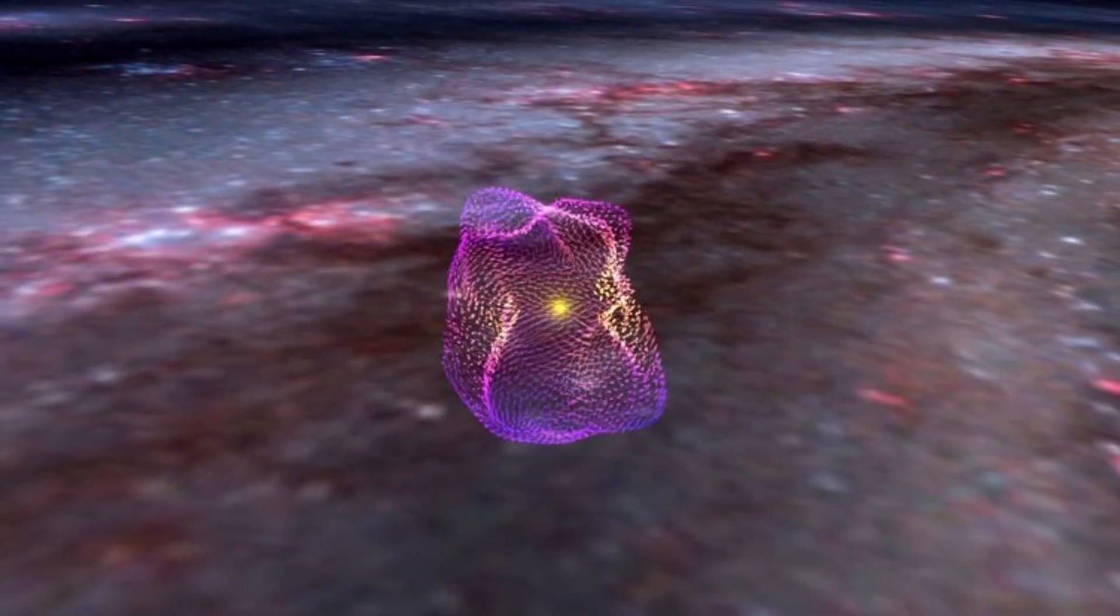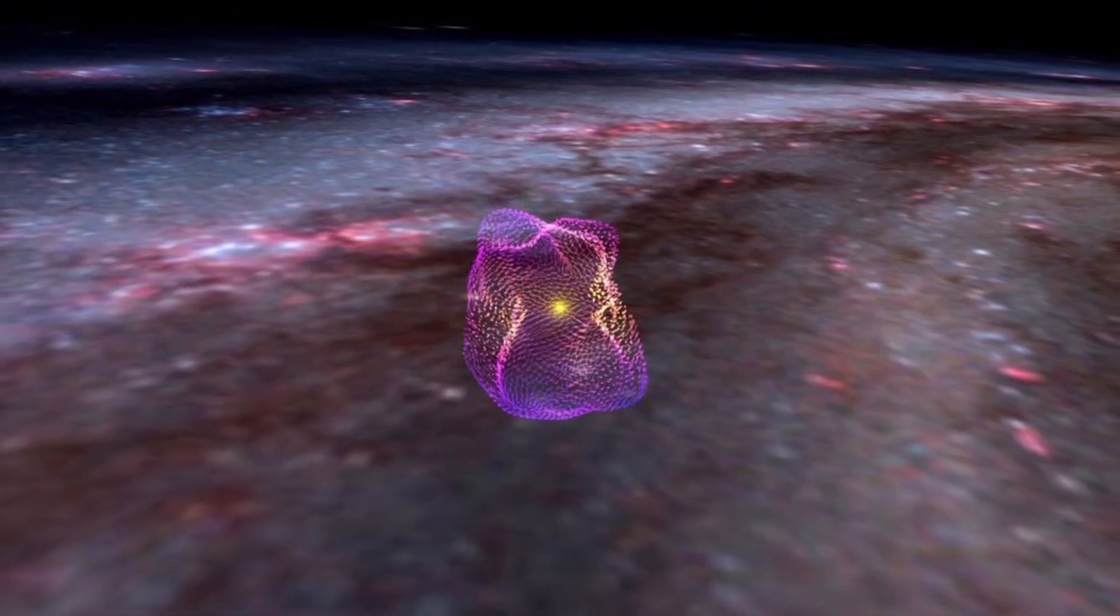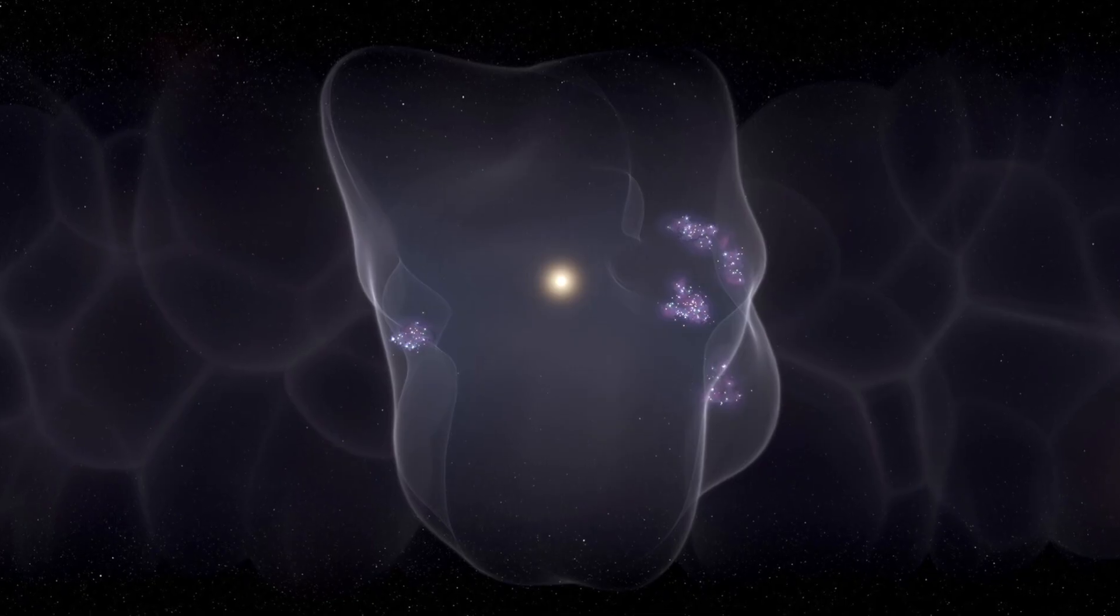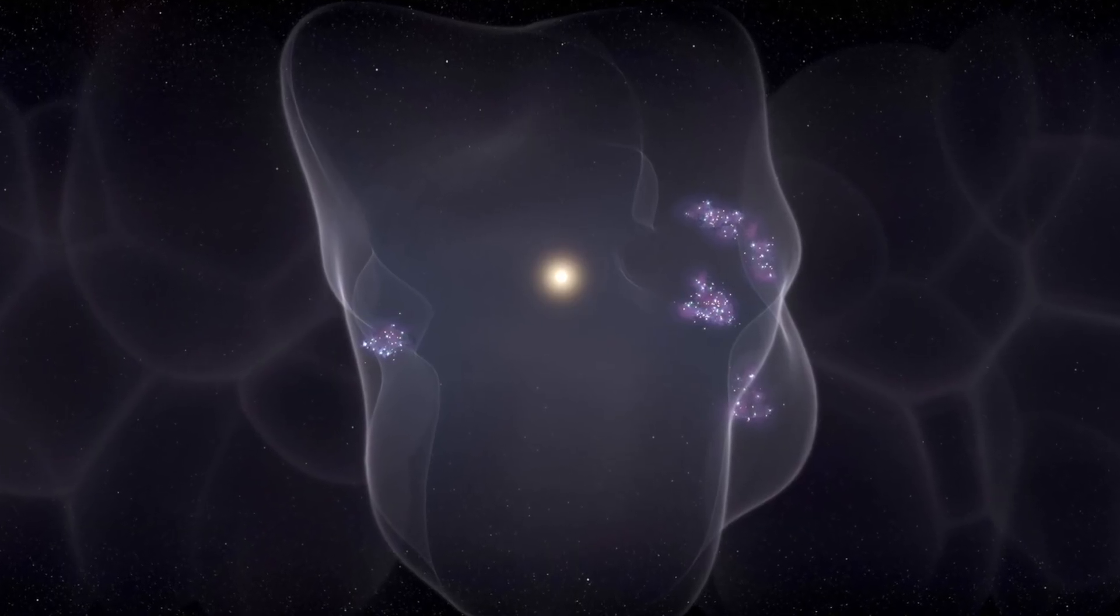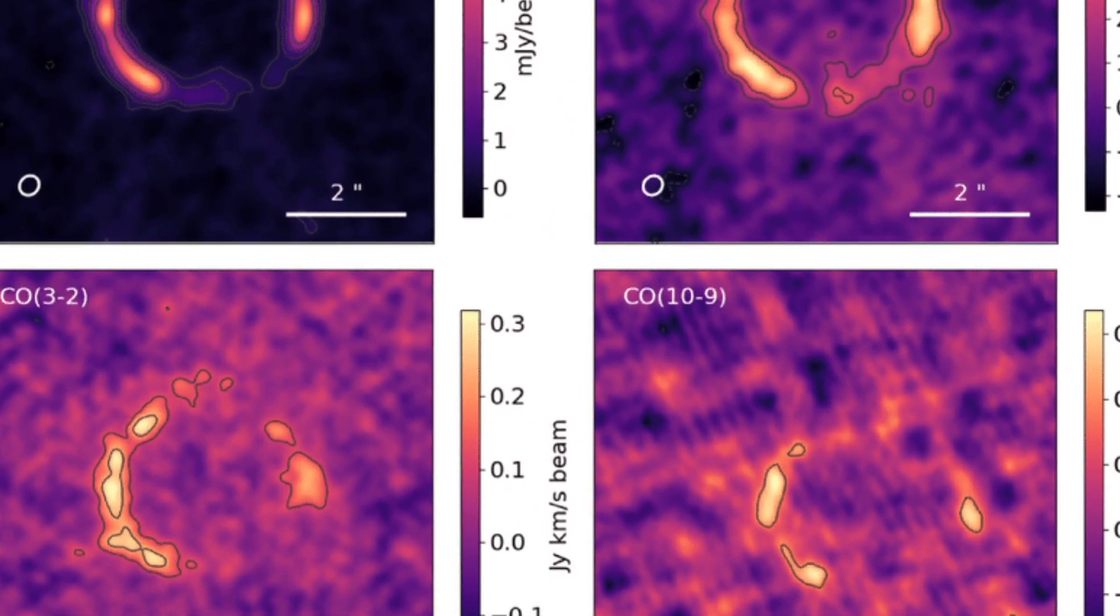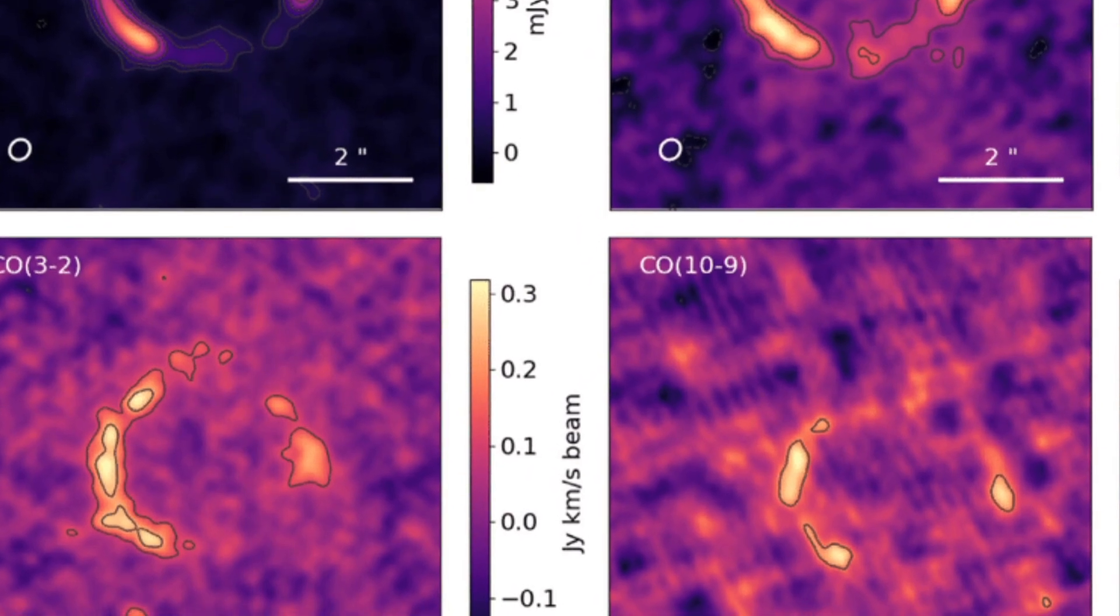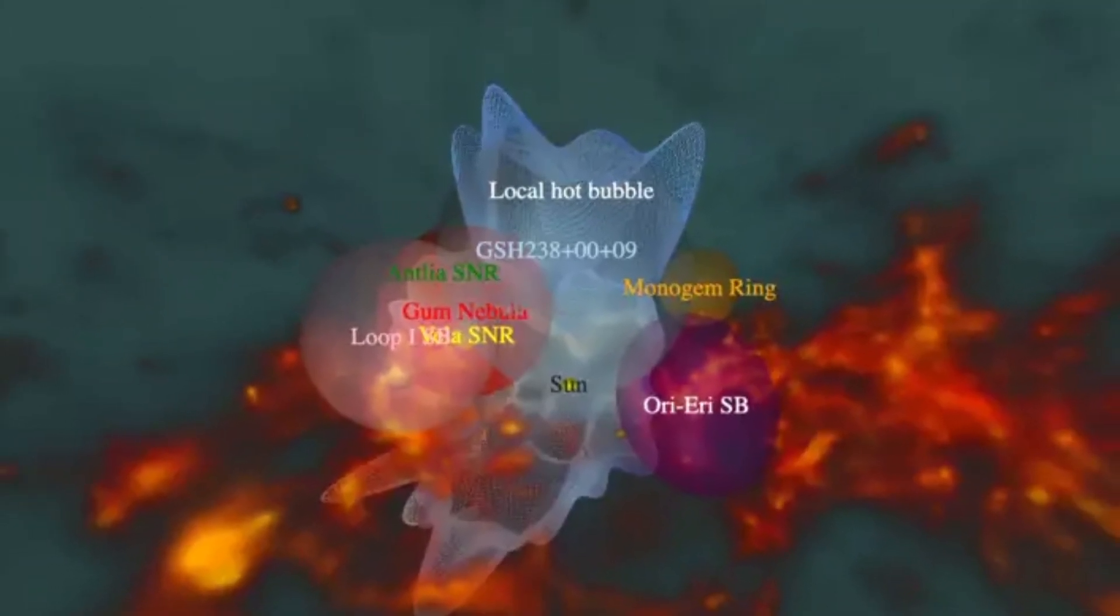It means we're surrounded by this hot, sparse gas cloud as we orbit the center of the galaxy. It is purely coincidental that the sun seems to occupy the central position in the local bubble. This position helps scientists study the bubble's characteristics through the different temperatures, densities, and cosmic rays encountered at various points.